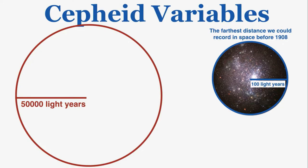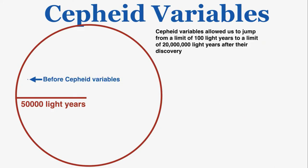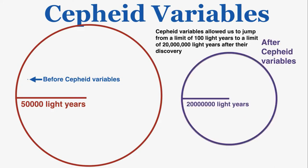That circle is not drawn to scale — compared to the galaxy, this tiny dot at the very end of the arrow represents our total range of measurable distance before 1908. Cepheid variables allowed us to jump from a limit of 100 light-years to a limit of 20 million light-years after their discovery.